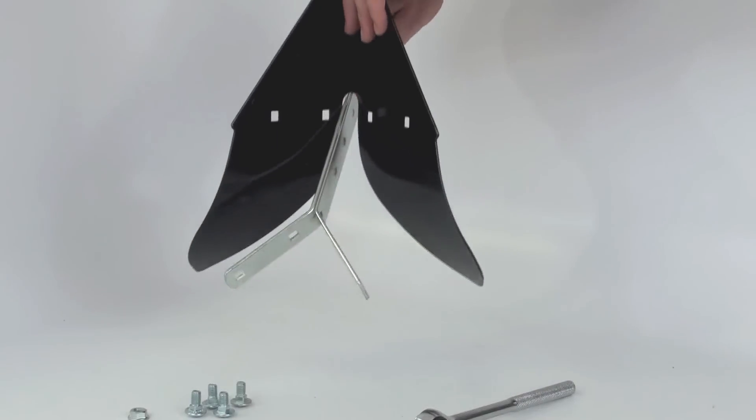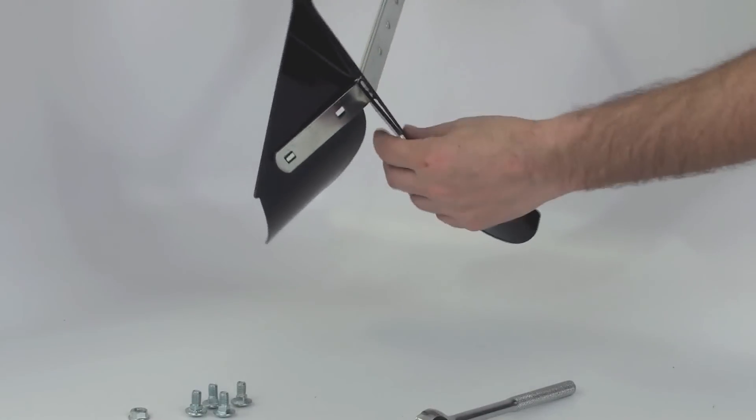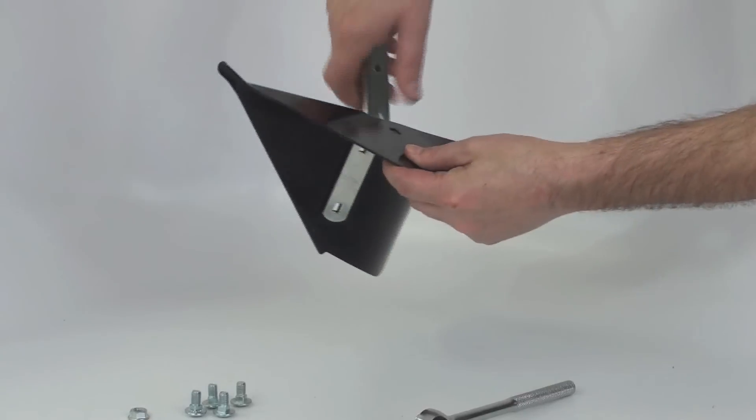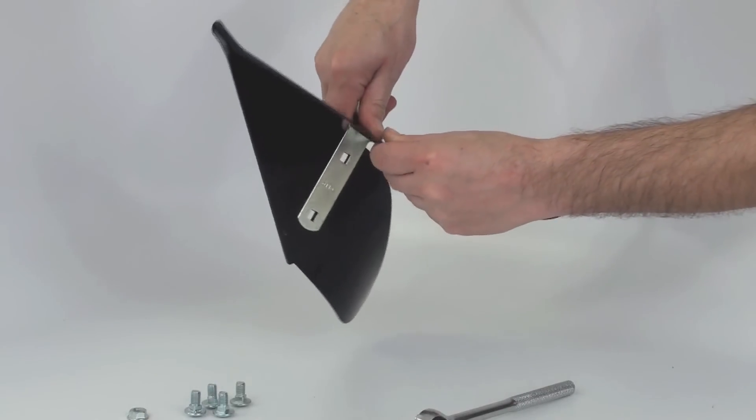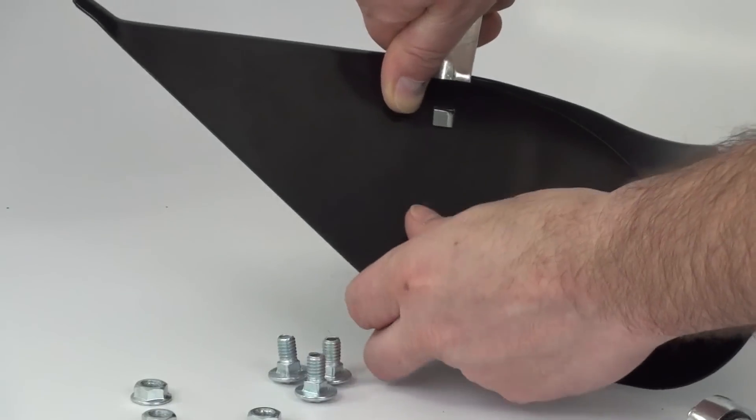Next you will mount the plow to the plow bar. Line up the holes of the plow mounting bracket with the holes in the plow blade and assemble with four carriage bolts and whiz head nuts that are provided.